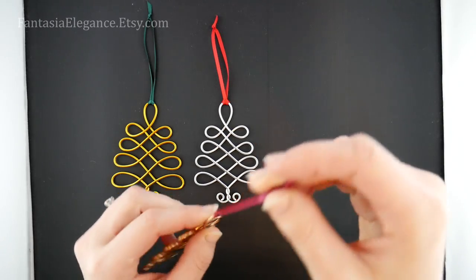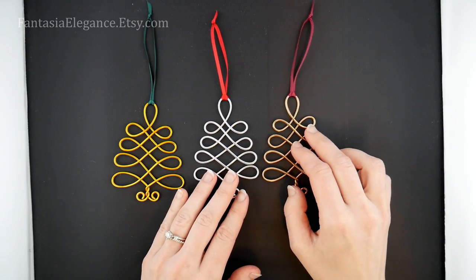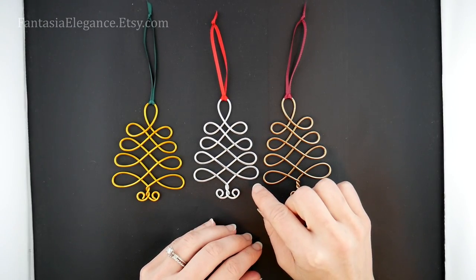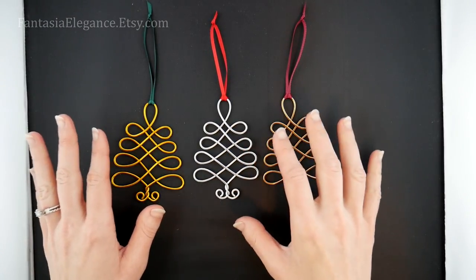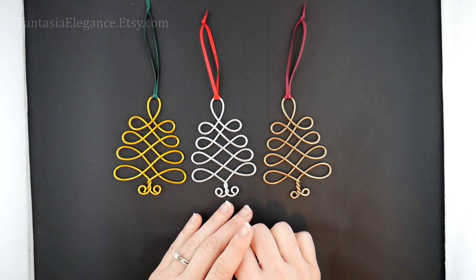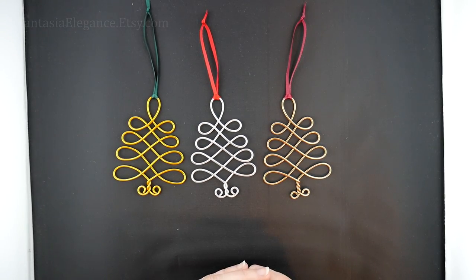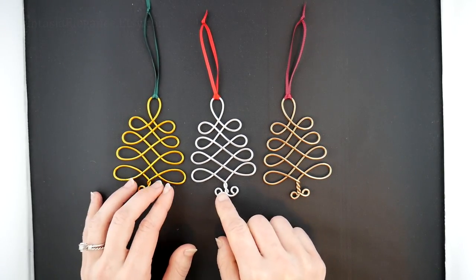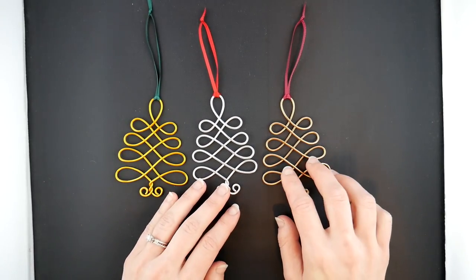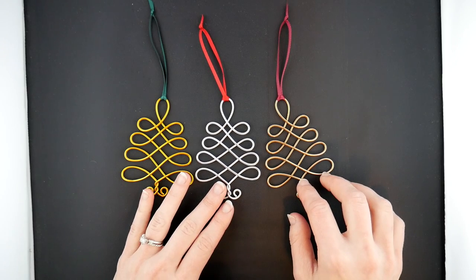One fun idea I had for customizing these further was that if you had some large hole beads that you could slide on the wire as you go, you could position those beads along as you're making the tree and they would look like Christmas tree ornaments, which would be a fun thing. You could also add beads with some little eye pins or head pins as little dangles. That would be another option. But as you can see, it's very fun just making the little wire motif in different colors with different ribbon styles.